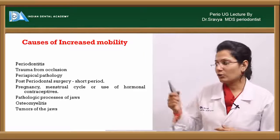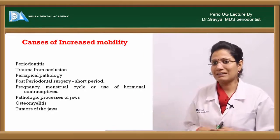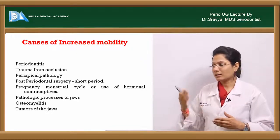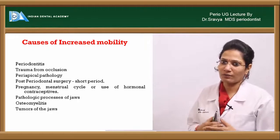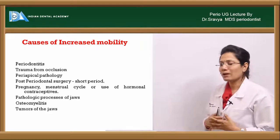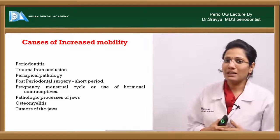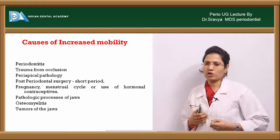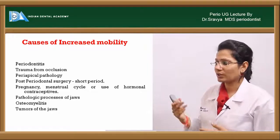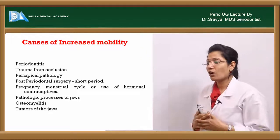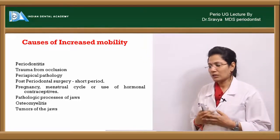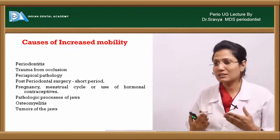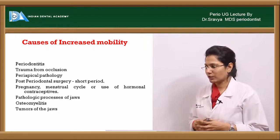What are the causes of increased mobility? Loss of alveolar bone due to periodontal disease is one of the most important causes of increased tooth mobility. Other causes include trauma from occlusion, periapical pathologies, post-periodontal surgeries (limited to a short period), pregnancy, menstrual cycle changes, use of hormonal contraceptives, and pathological processes in the jaws such as cysts and tumors.